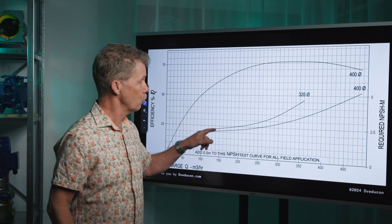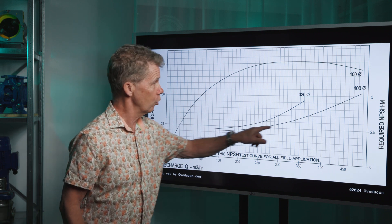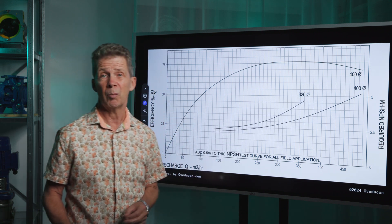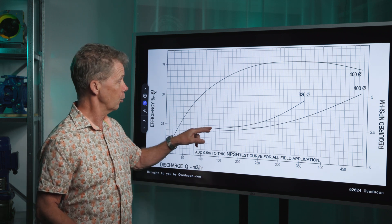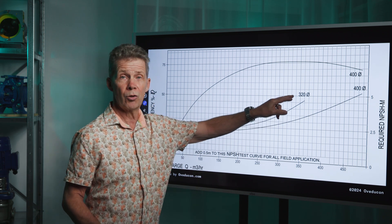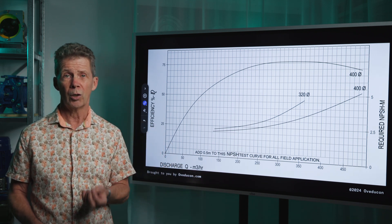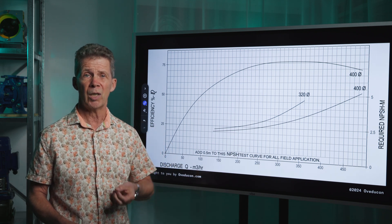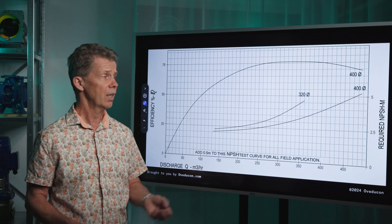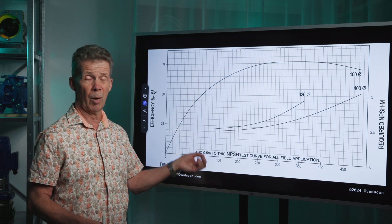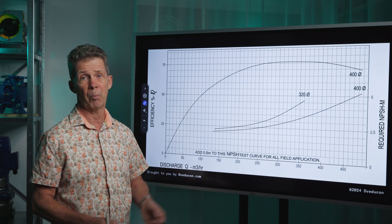In this pump curve you see the NPSH curve of impeller diameter 400 and for an impeller diameter 320. So you don't have to calculate the NPSH-R. NPSH-R is already given in the pump curve made by the pump manufacturer.